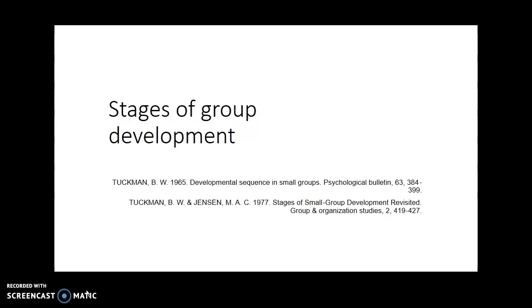One: testing and development, otherwise known as forming. Two: inter-group conflict, or storming. Three: development of group cohesion, the norming stage. And finally, a stage where functional roles relate well to each other, which he named the performing stage.